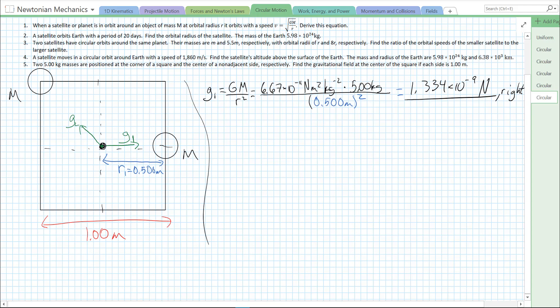Now let's find the G field strength caused by the second object, the one in the top left corner, G2. It's going to be Gm over R2 squared. So, it's still 6.67 times 10 to the minus 11 meters squared per kilogram squared, times the mass producing it. It's another 5.00 kilogram mass. And the distance, which we're going to call R2.